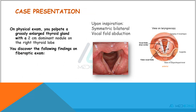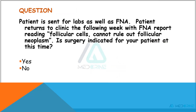On physical examination of our patient, you palpate a grossly enlarged thyroid gland with a 2 cm dominant nodule on the right thyroid lobe. On fiber-optic examination, you discover symmetrical bilateral vocal cord abduction upon inspiration, shown in this image here. The patient is then sent for labs as well as fine needle aspiration. She returns to the clinic the following week with her FNA report indicating that follicular cells cannot rule out follicular neoplasm.